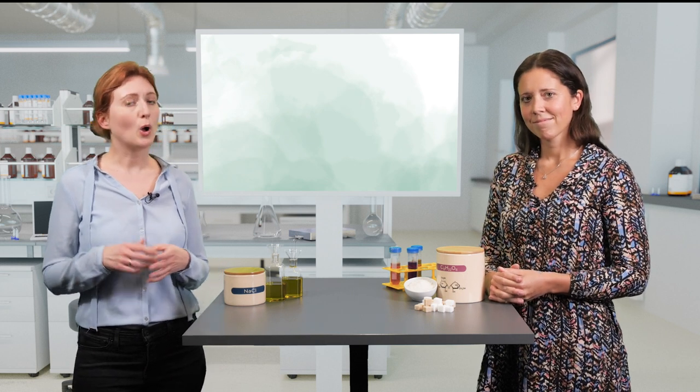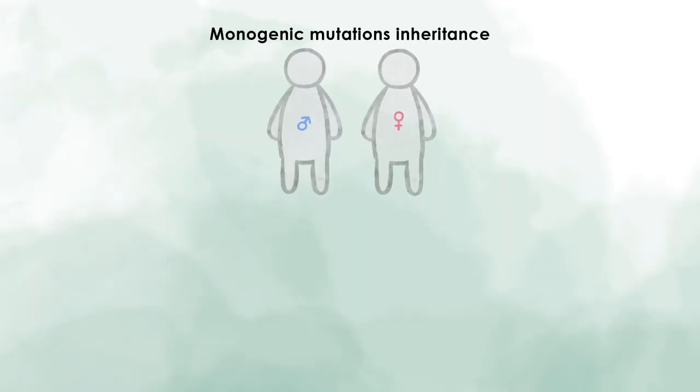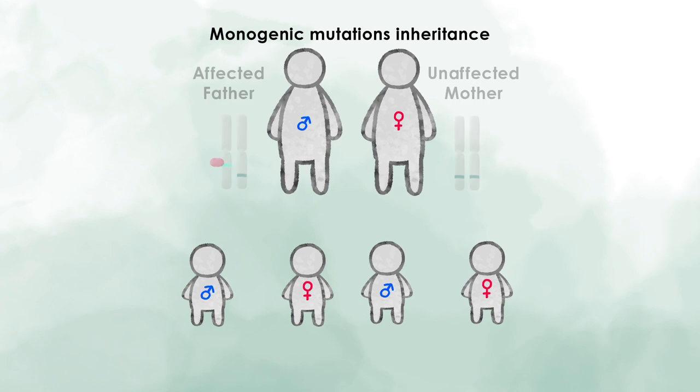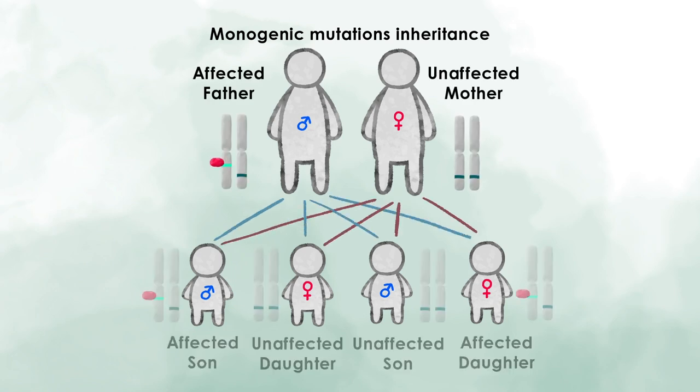Most of you have heard the saying: we are what we eat. And of course there is truth to it. But you could also say you are what your parents or your grandparents ate. We all have our personal mix of risk and also protective genes. We inherit genes from our ancestors, and in some cases a mutation in one gene leads to the development of a phenotype — we call it a monogenic cause.